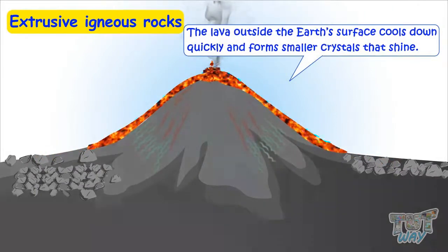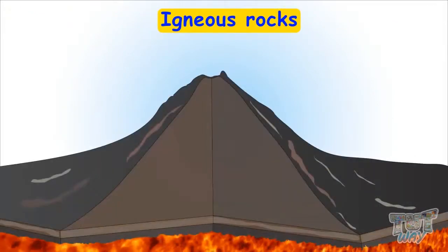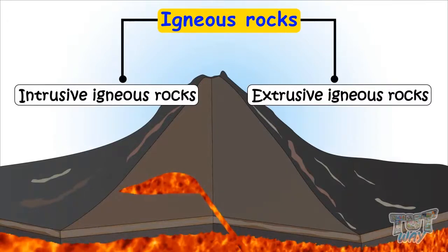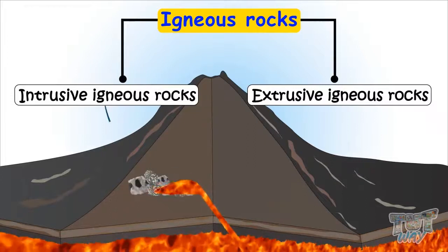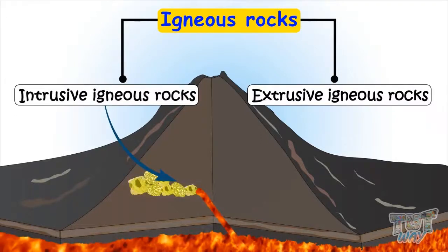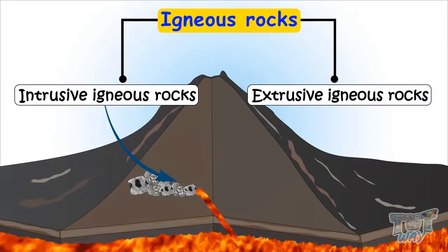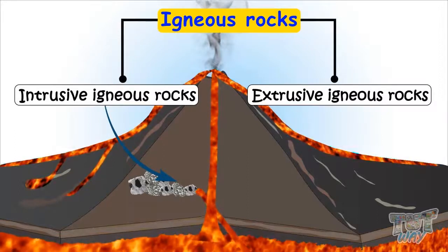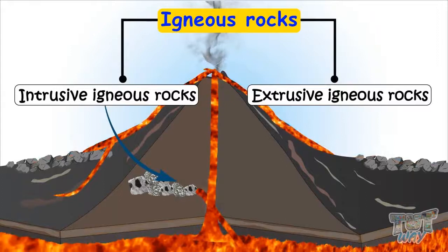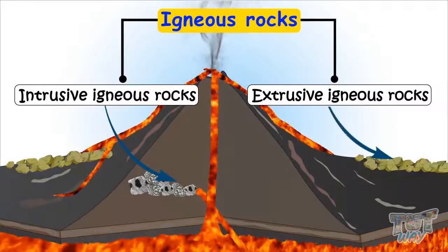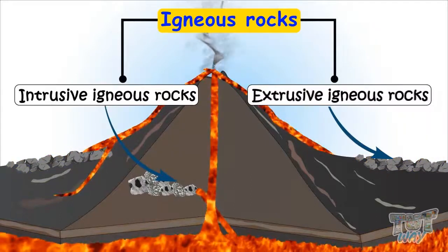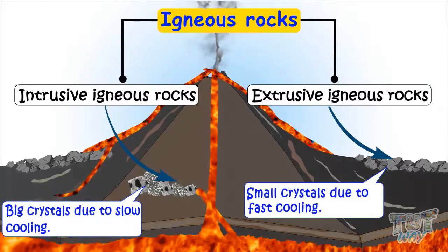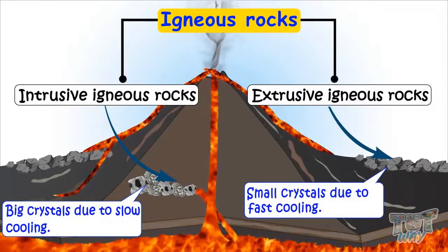So kids, we learned that igneous rocks are of two types: intrusive igneous rocks and extrusive igneous rocks. When the hot molten matter inside the earth cools down, it forms intrusive igneous rocks with bigger crystals as the molten cools at a slower rate. And when lava comes out of the earth's surface and cools down outside, it forms rocks with shinier and smaller crystals, known as extrusive igneous rocks, because the molten matter cools down very quickly.